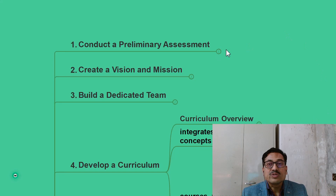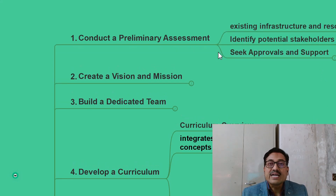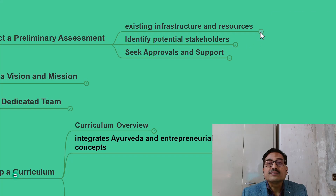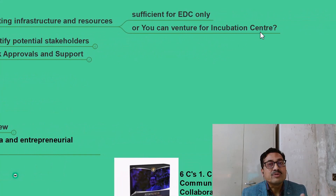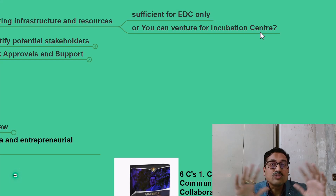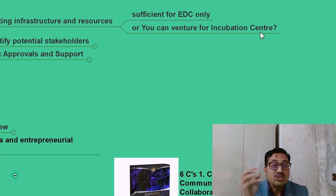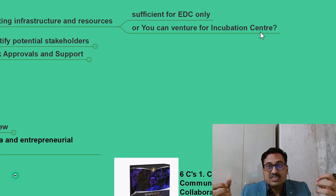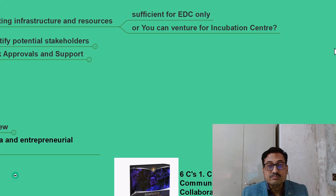The first step is to conduct a preliminary assessment, where you need to assess what existing infrastructure and resources you have to start up your entrepreneurial development cell. You need to check whether it is sufficient or whether there are gaps you need to fill. If you are in a well-resourced institution, you also need to check whether an incubation center can be facilitated there. For example, if 100 students come with innovative ideas using Ayurveda, they will be brought into the entrepreneurial development cell.